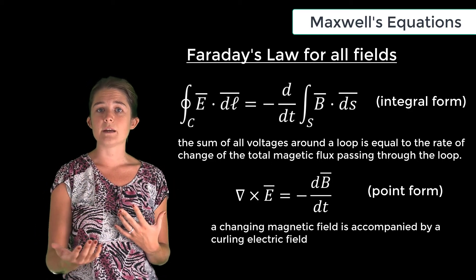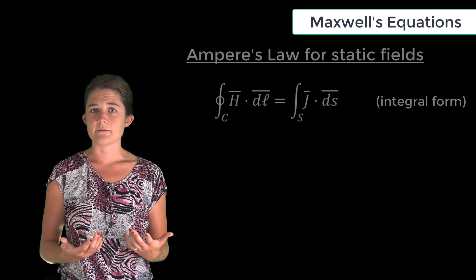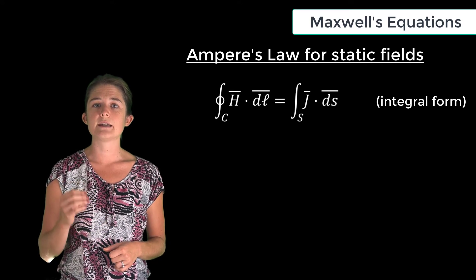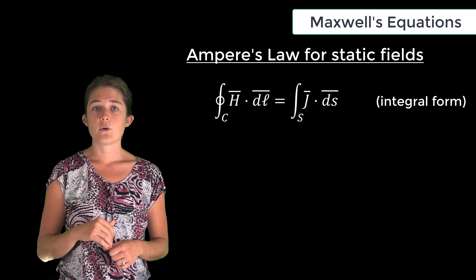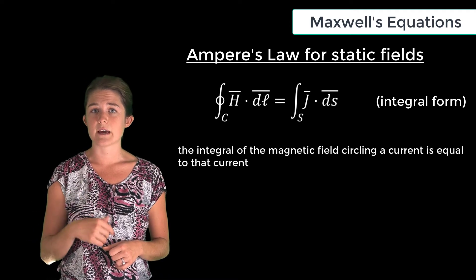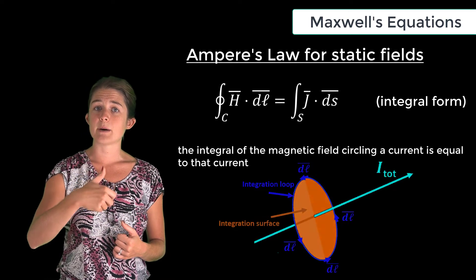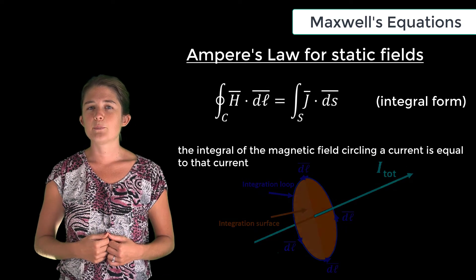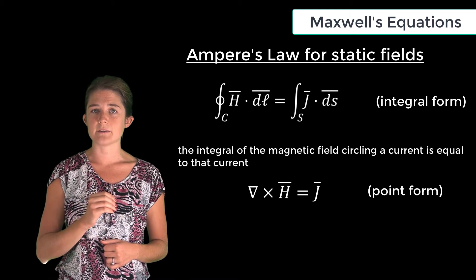Ampere's law for static fields: the integral of H dot dl around a closed loop is equal to the integral of J dot ds over the surface enclosed by the loop — in other words, the integral of the magnetic field circling a current equals that current. A current is always surrounded by a magnetic field that circles it in a right-handed direction. In point form, the curl of the magnetic field equals the current density.